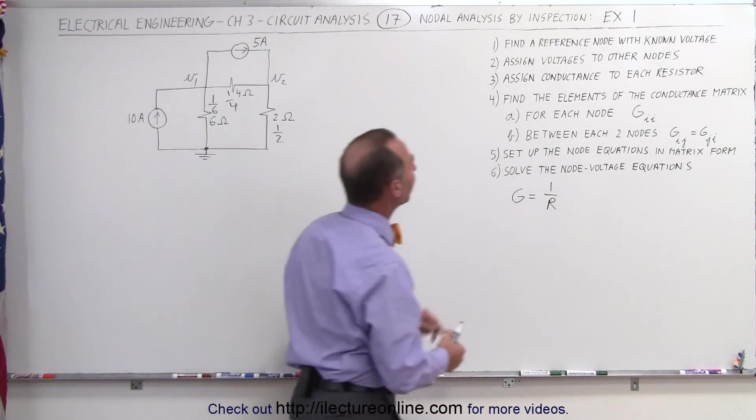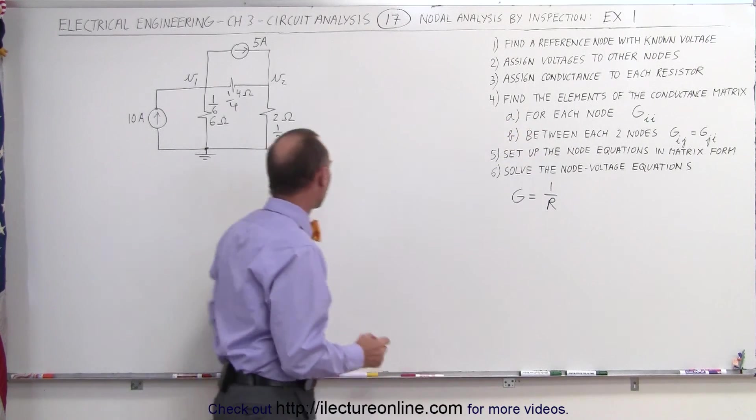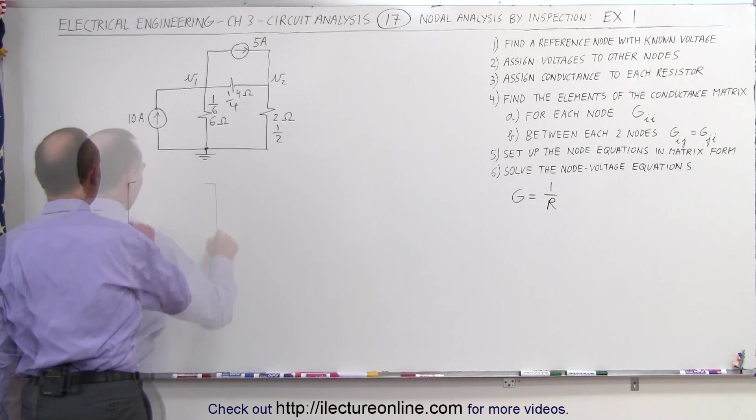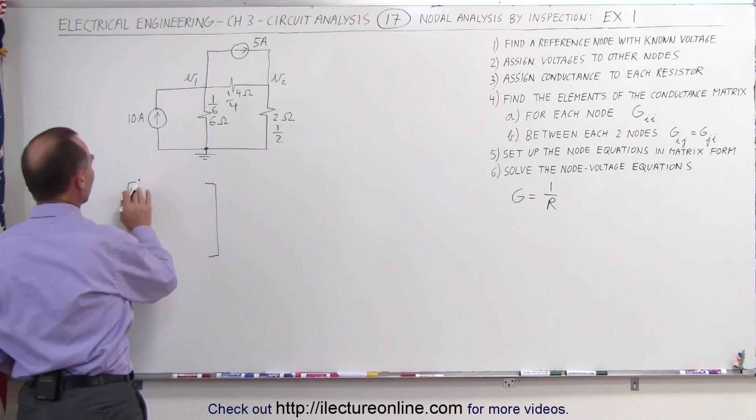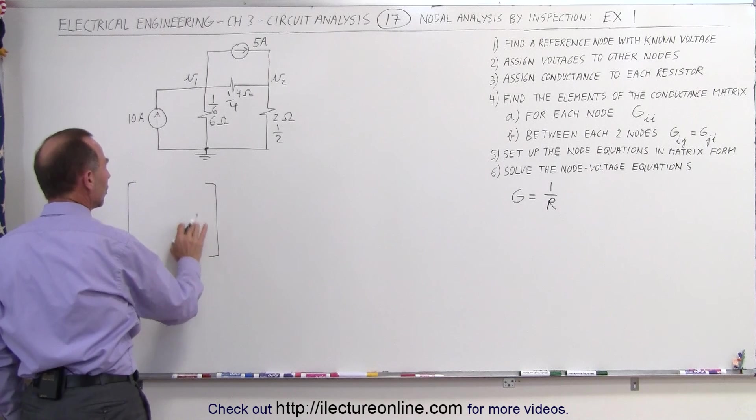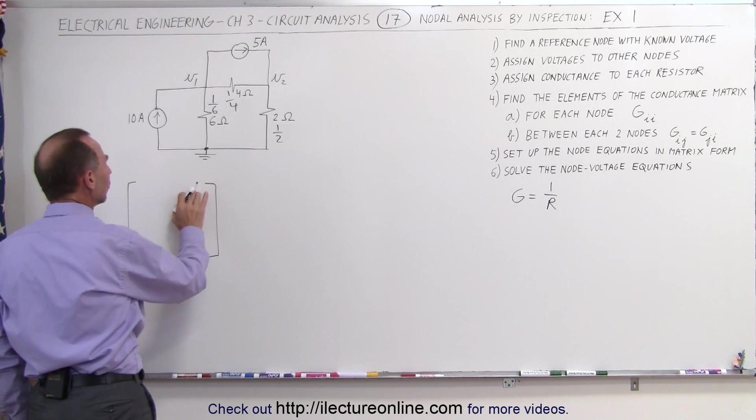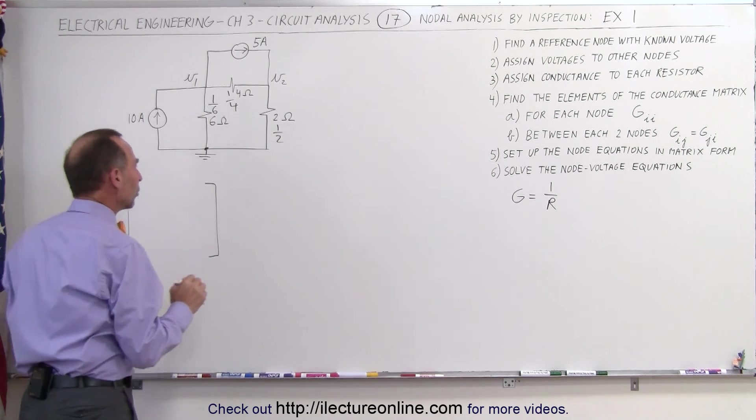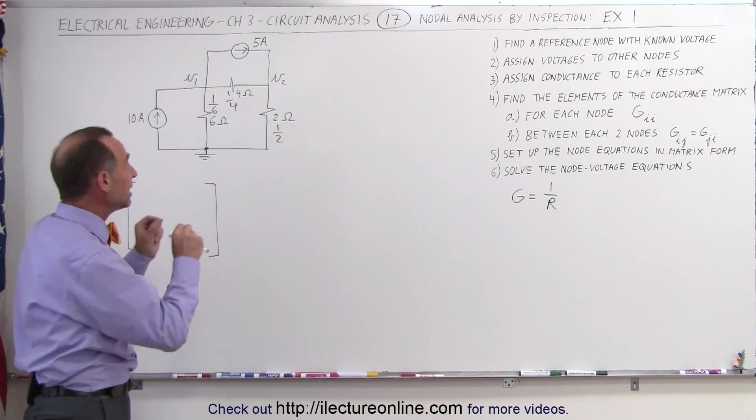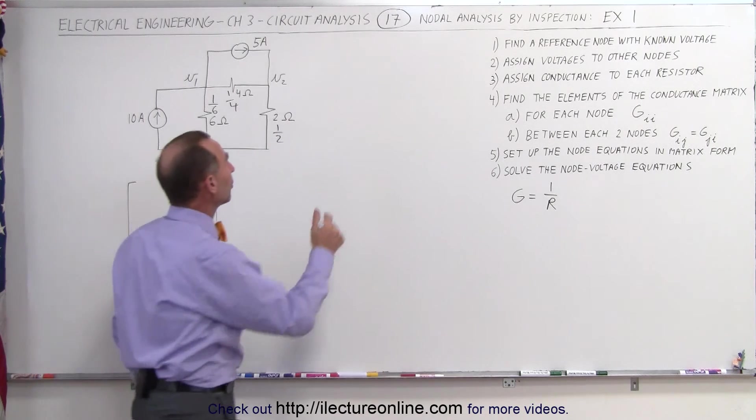Next step, we want to find the elements of the conductance matrix. We're going to need a matrix right here, and in here we're going to have the G11, the G22, and then the minus, the cross G's, with other words, the conductance between the nodes.